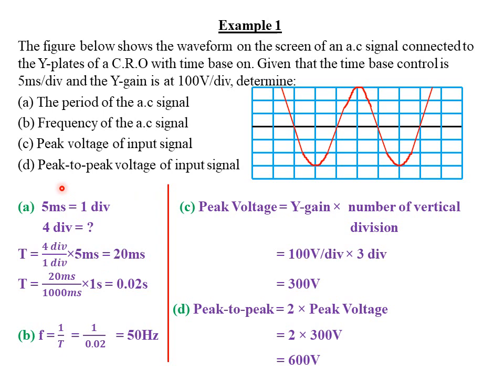For part C, we find the peak voltage of the input signal. The peak voltage is always measured using the Y gain on the vertical axis. The Y gain is 100 volts per division, meaning each vertical division represents 100 volts. The Y gain is connected to the Y plates, which are responsible for vertical deflection of the beam. Peak voltage equals Y gain multiplied by the number of vertical divisions from the zero line to the peak.